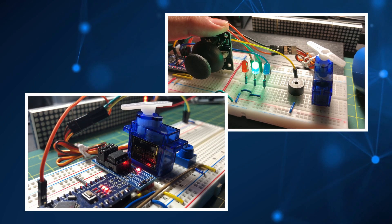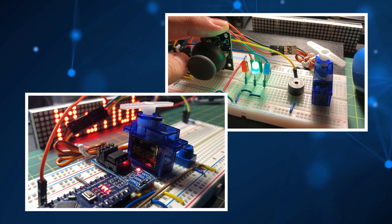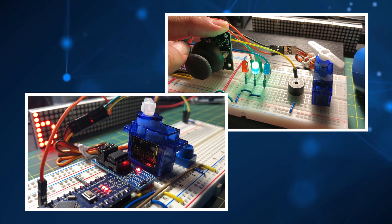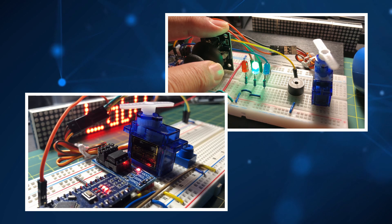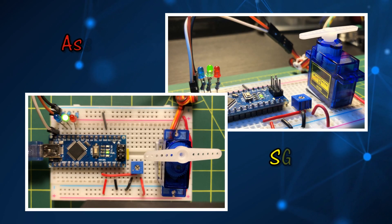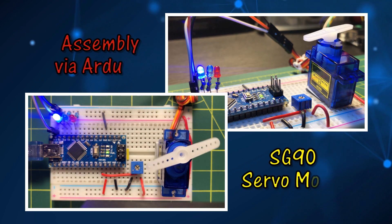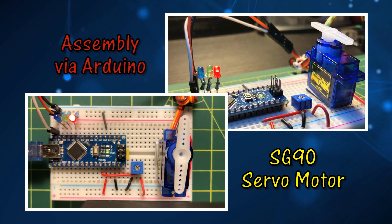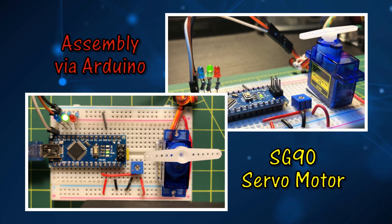In my previous projects, I have programmed servo motor SG90 in different applications using C++ and servo libraries. In this video, SG90 is programmed using assembly to rotate the servo clockwise and counterclockwise.